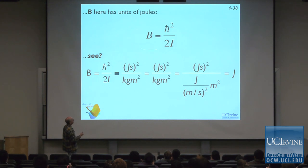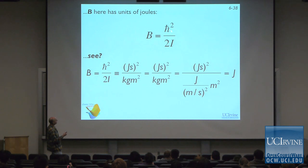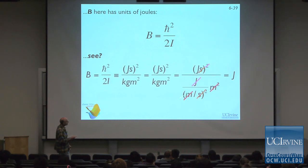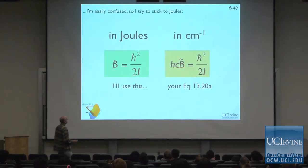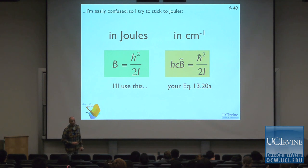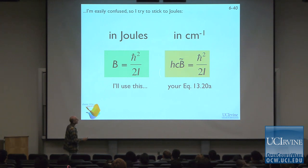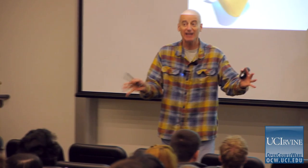When I write B, I write it in joules — h has units of joule-seconds, I is kilogram·meter², so working through the units gives joules. I'm always working in joules so I can use my two conversion factors to get wave numbers or eV. Your book will constantly use B with a tilde, denominating it in wave numbers. I'm going to do everything in joules and convert later if needed — don't be confused by that.